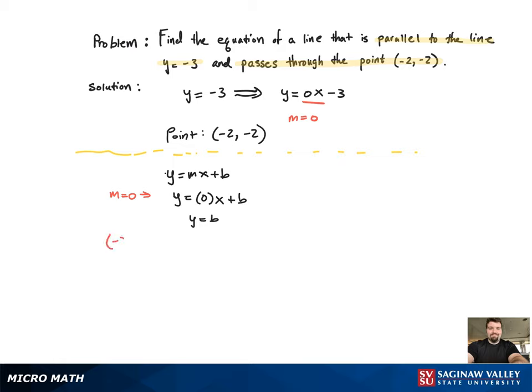So to find b, we're going to plug the point negative 2, negative 2 in. And you have it, negative 2 equals b.